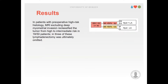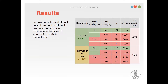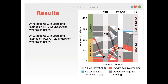We found that in patients with preoperative high-risk histology, MRI excluding deep myometrial invasion reclassified the tumor from high to intermediate risk in 18 and 50 patients, and in three of these, lymphadenectomy was ultimately omitted. For low and intermediate risk patients without additional risk based on imaging, lymphadenectomy rates were 27% and 62% respectively. Of 78 patients with upstaging findings on MRI, 62 underwent lymphadenectomy, and of 22 patients with upstaging findings on PET-CT, 20 underwent lymphadenectomy.